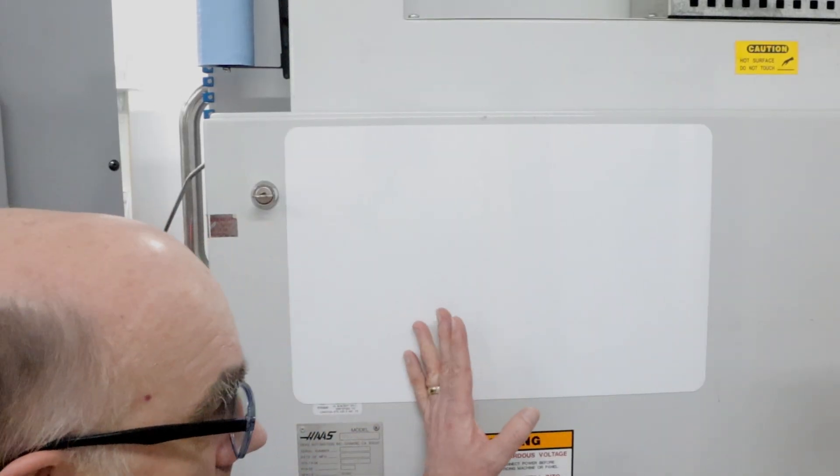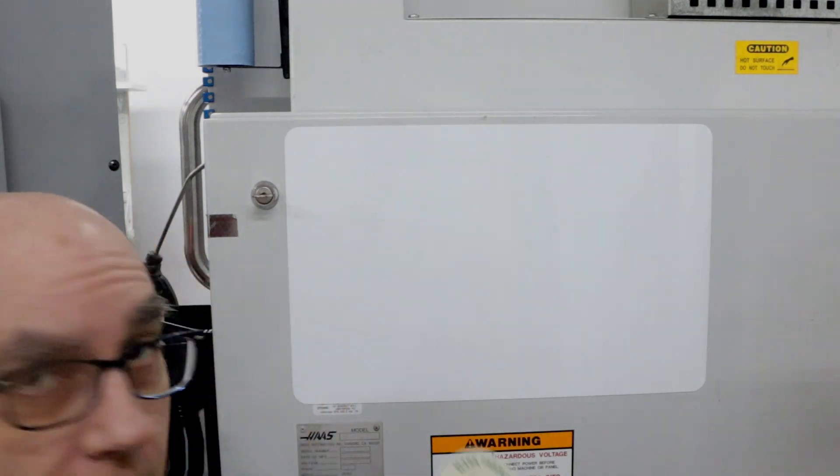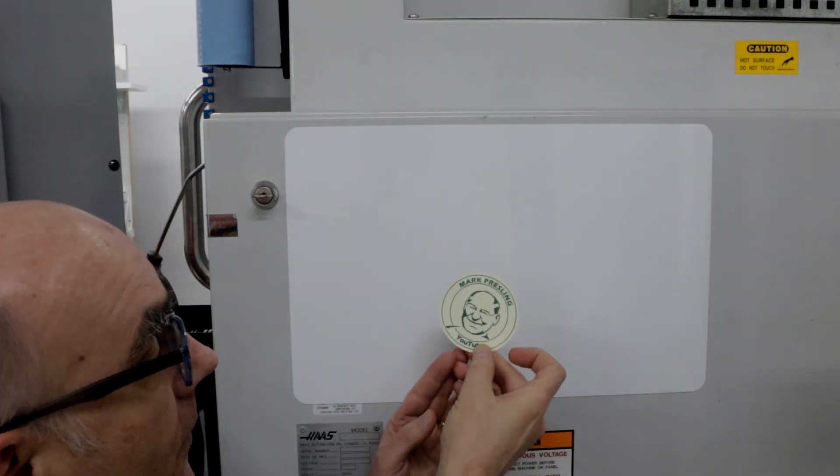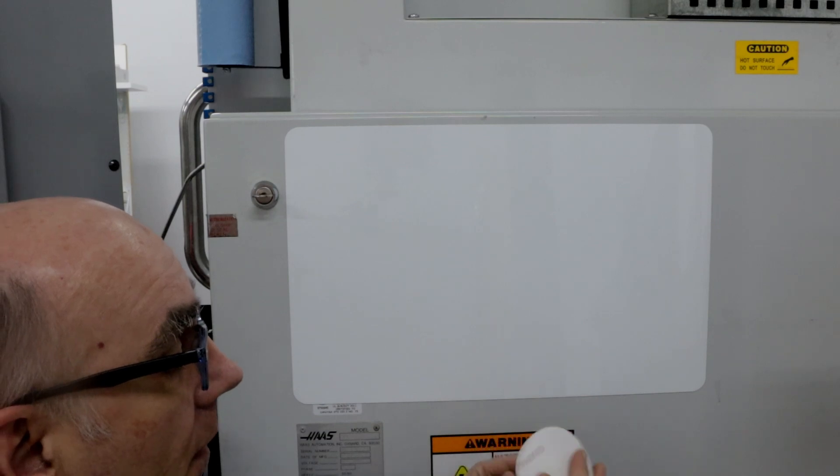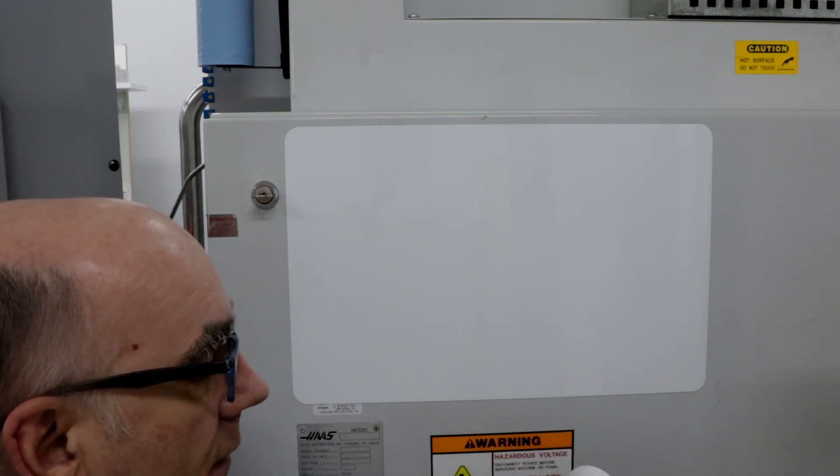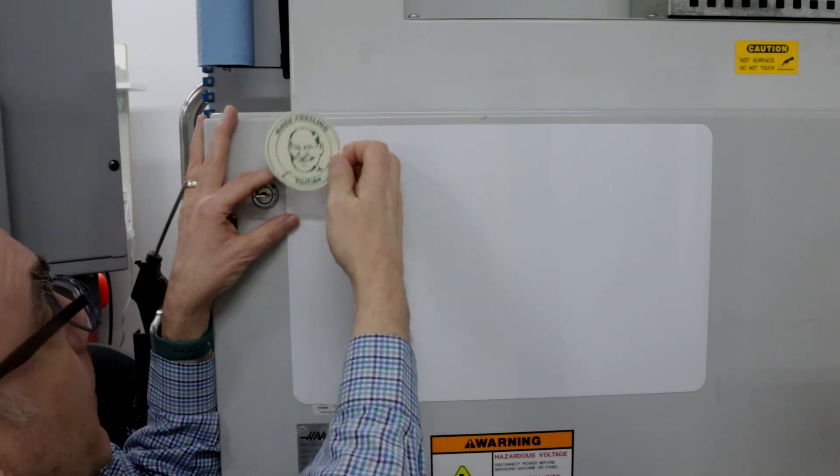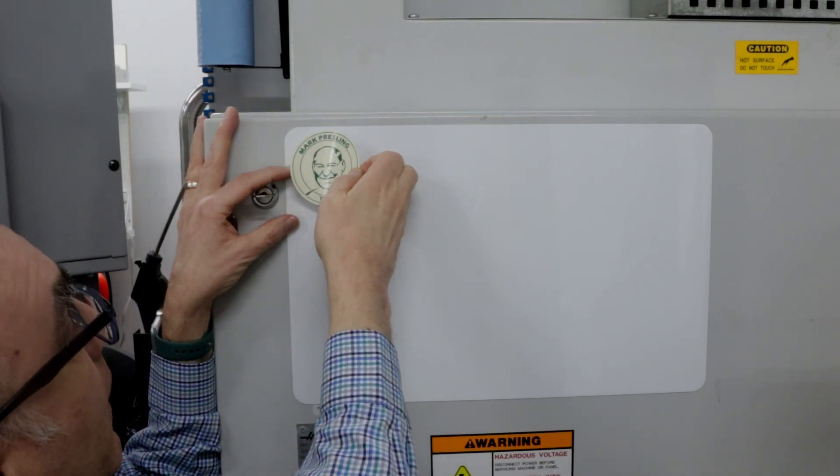Before I get to that, I'd like to head over to the sticker board. I have this whiteboard on the side of my Haas, and that's where I'm going to put these stickers. This is the first one, I've shown this before, this is Mark Pressling. I love his channel, been watching it since I learned about it about a year or so ago.